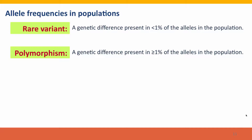Now that we know how to think about allele frequencies in populations, I have to introduce some terminology. If a genetic difference is present in less than 1% of the population, it's usually described as a rare variant. But if it's present in at least 1% of the alleles in the population, there's another term that's very widely used — it's called a polymorphism. Until recently, geneticists have spent a lot more time studying polymorphisms than studying rare variants, just because they're a lot easier to find and to study. We're only now developing the tools to study rare variants, and we'll talk a little bit about this in Module 5.